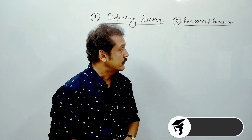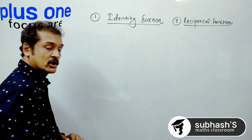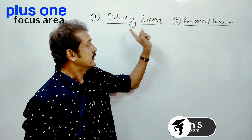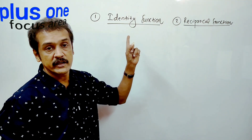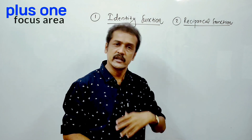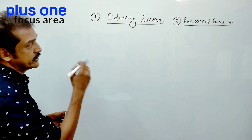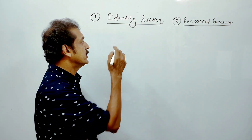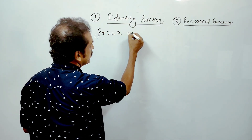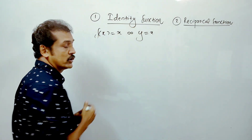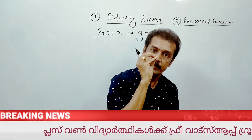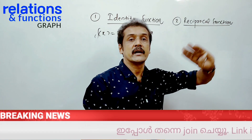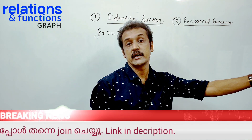1 is Identity Function, 2 is Reciprocal Function. A function is in the form of the identity function.